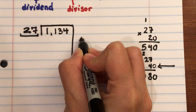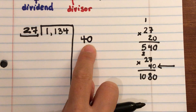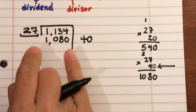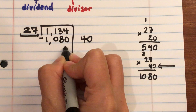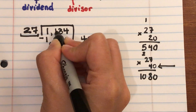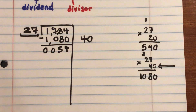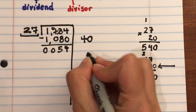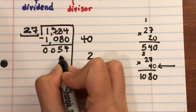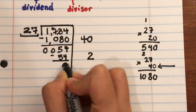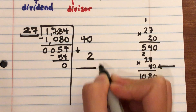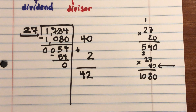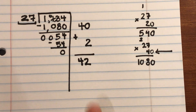On the right side of the line I write my partial quotient: 40. Then I subtract 1,080 from 1,134, which leaves 54. How many times can 27 go into 54? Twice — because 27 × 2 = 54. Subtract and I have 0. Now add the partial quotients together: 40 + 2 = 42, which is the final quotient.